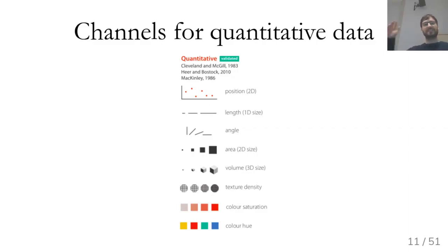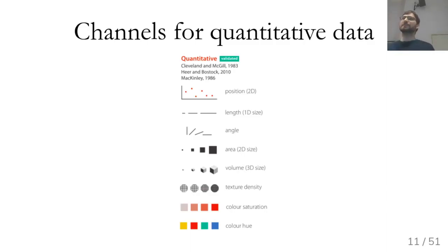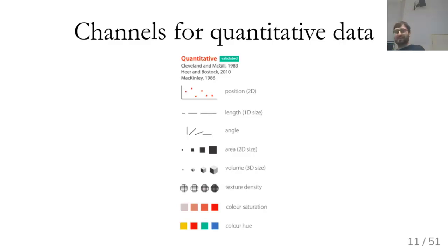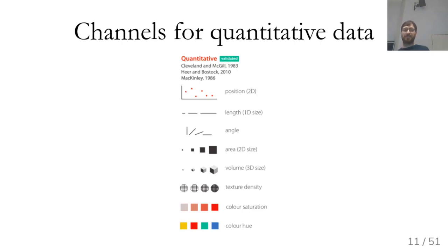Comparing the area of two things is much harder than comparing lengths. This is why pie charts are often considered worse than bar charts — in a pie chart you're using either angle or area, and these are harder to compare than length. 3D is even harder, and color hue is at the very bottom of this hierarchy.